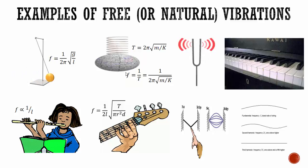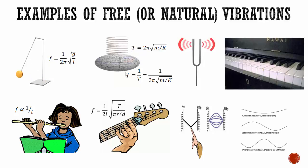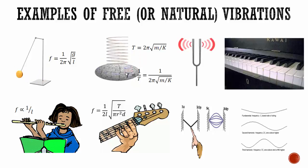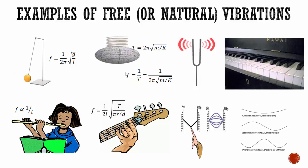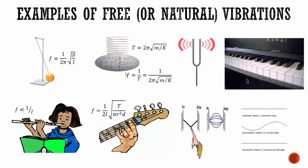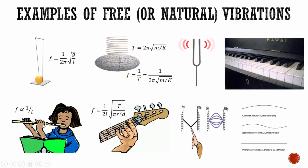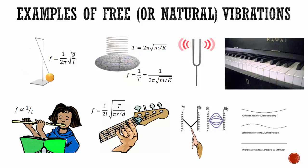When a tuning fork is struck against a hard rubber pad, it vibrates with its natural frequency. This sound is of single frequency, known as a pure note. Similarly, when we strike the keys of a piano, various strings are set into vibration at their natural frequency. When an air column in a flute or an organ pipe is made to vibrate, it vibrates with its natural frequency, which is inversely proportional to the length of the air column. Notes of different frequency are produced by changing the effective length of the air column by closing different holes in the flute.